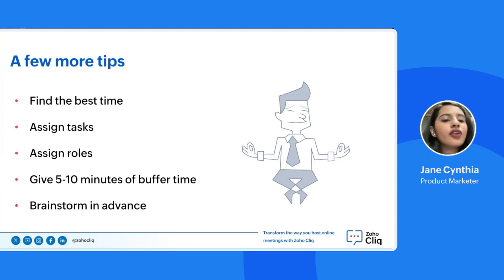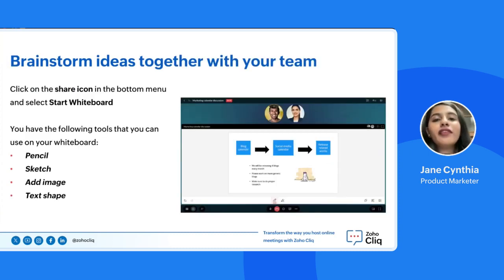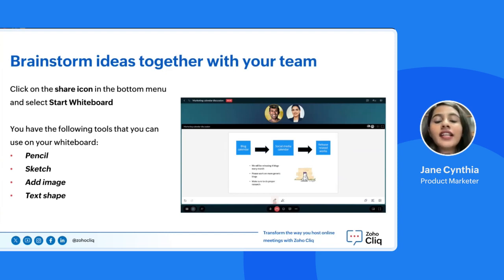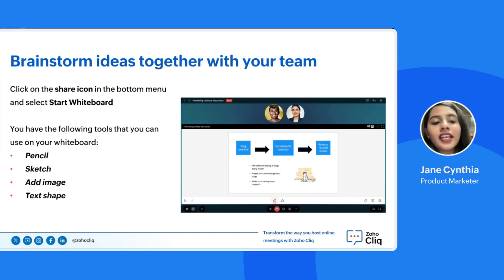You can use the whiteboard by following these steps: click on the share icon at the bottom of the menu and select start whiteboard. You can also provide edit access to all participants in the meeting by clicking on the kebab menu and selecting the edit option from the dropdown menu.